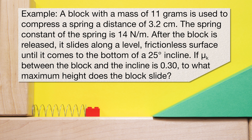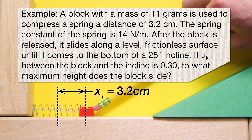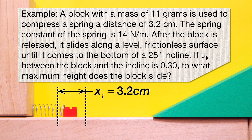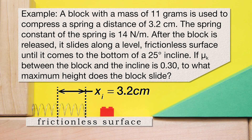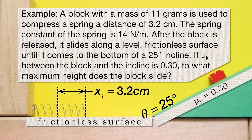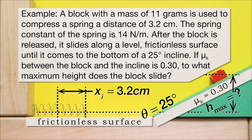We have the same problem. A block with a mass of 11 grams is used to compress a spring a distance of 3.2 centimeters. The spring constant of the spring is 14 newtons per meter. After the block is released, it slides along a level frictionless surface until it comes to the bottom of a 25 degree incline. If the coefficient of kinetic friction between the block and the incline is 0.30, to what maximum height does the block slide?